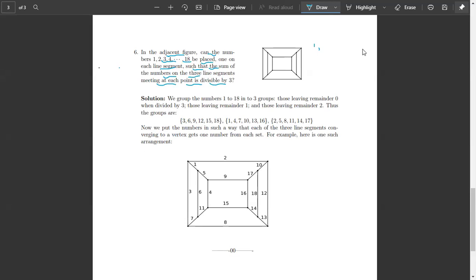We have the numbers 1 to 18 and we want, like this is the point here, three line segments are meeting. So we want the numbers on each line segment if we sum it, it is divisible by 3.